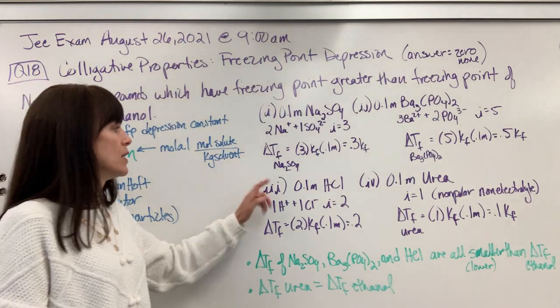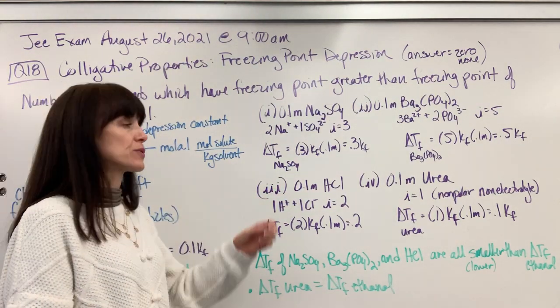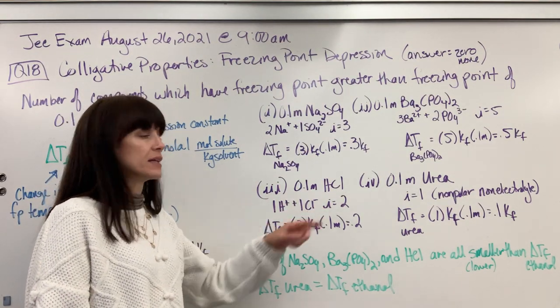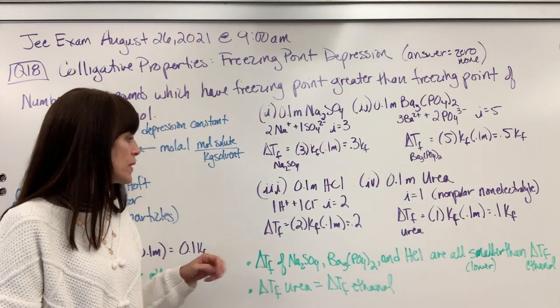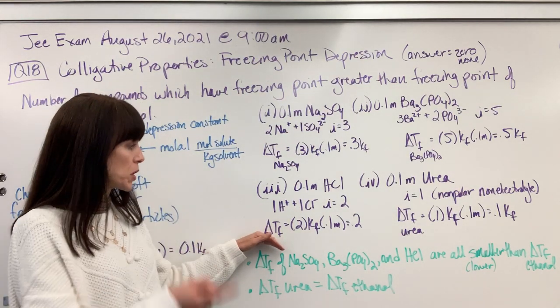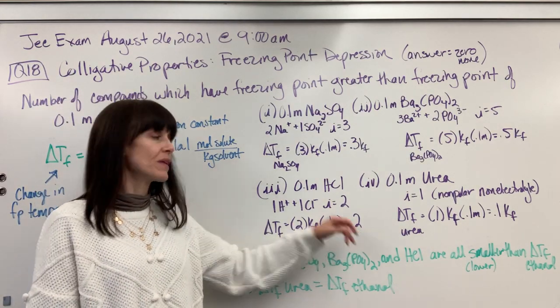Let's look at the third one. We have 0.1 molal hydrochloric acid, HCl. This is going to ionize into two particles. One hydrogen ion plus one chloride ion gives us two particles. So the change in temperature for the freezing point of the HCl, how much lower it's going to go, is two times Kf times 0.1 gives you 0.2.